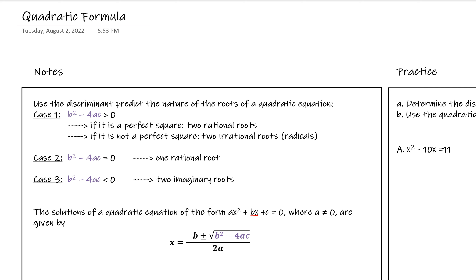Case three is when the inside of that radical, our discriminant, is less than zero — when it's negative. That's when we're going to have two imaginary roots, because we'll have a negative number inside, and when we take the square root of a negative number we get imaginary numbers. Case three technically has two situations as well: if the negative number is a perfect square, we'll get a nice imaginary number we can simplify all the way; if not, we'll have the radical simplification involved, just like case one.